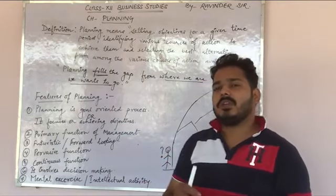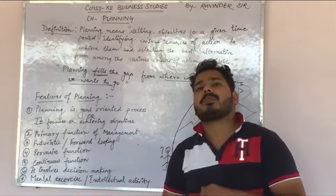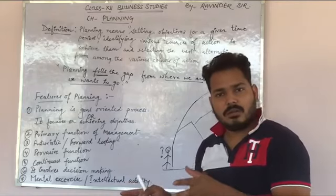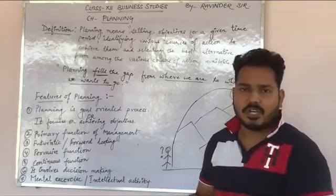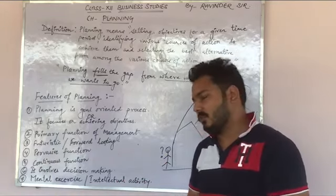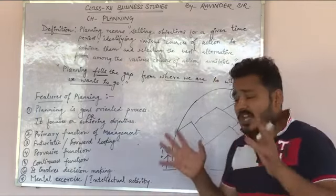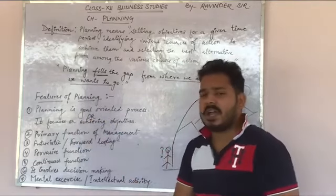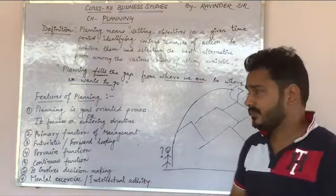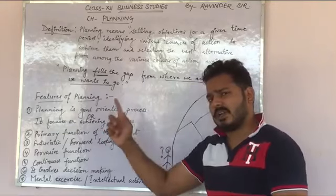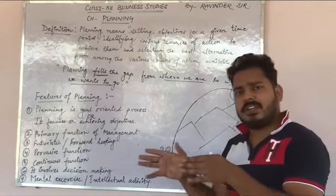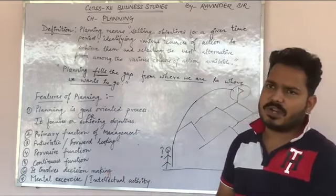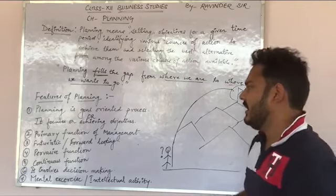क्योंकि हमारी management के बहुत सारे objectives हैं — first chapter में भी हमने पढ़ा — तीन तरीके के objectives होते हैं: organizational, social, और personal objective (जिसे हम human या individual objective भी कहते हैं). वो सारे objectives को achieve करने के लिए planning करनी होती है. There must always be a goal behind any planning. Planning का focus होता है: achieving the target in an effective and efficient manner — कम cost पर और जल्दी से.